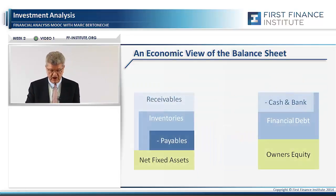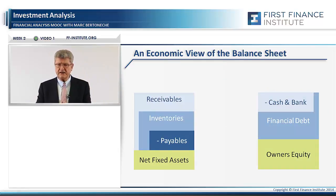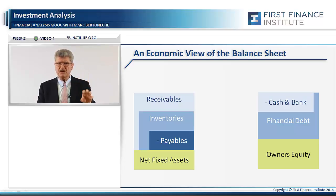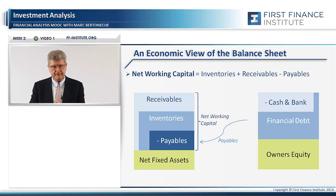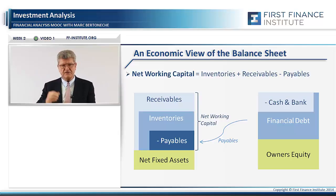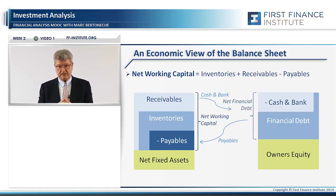What you get — and that's what you have in the second slide — is on one side: net fixed assets plus something which is inventory plus accounts receivable minus payables. This is what we are going to call later the net working capital. And on the other side, you have the equity — shareholder's money — and the financial debt minus the cash, which is what we'll be calling later the net financial debt.